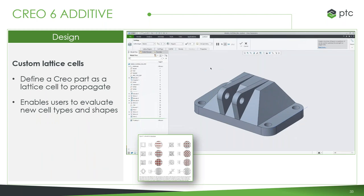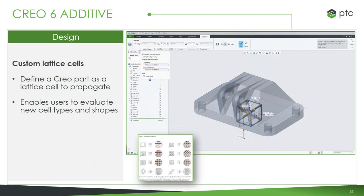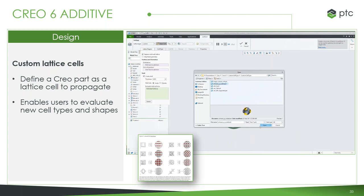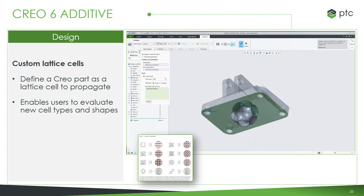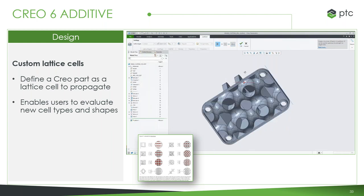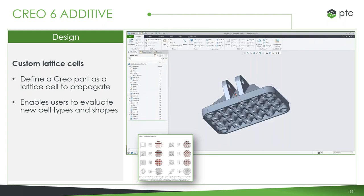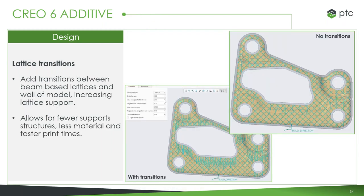We also have the ability to create your own custom lattice cells. You can take a Creo part that you've built and build the lattice right from that — simply select Custom as the lattice type, grab that Creo model, and the system automatically builds out the lattice using the cell you defined. You can try out different shapes and sizes, and really your imagination is the limit. For lattice transitions — specifically between beam-based lattices and the walls of your part — you can build up support areas without support structures, using less material and achieving faster print times.